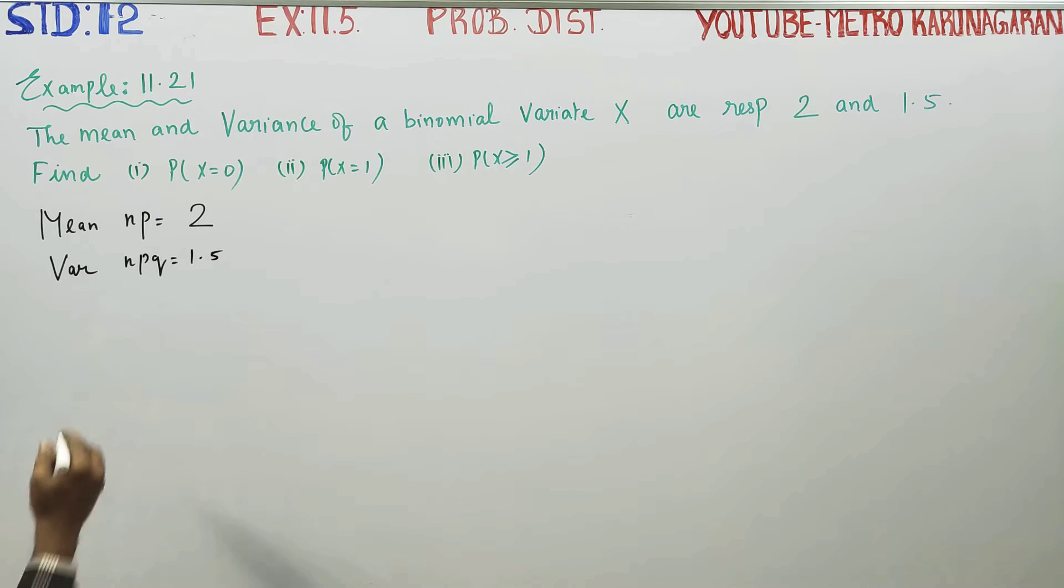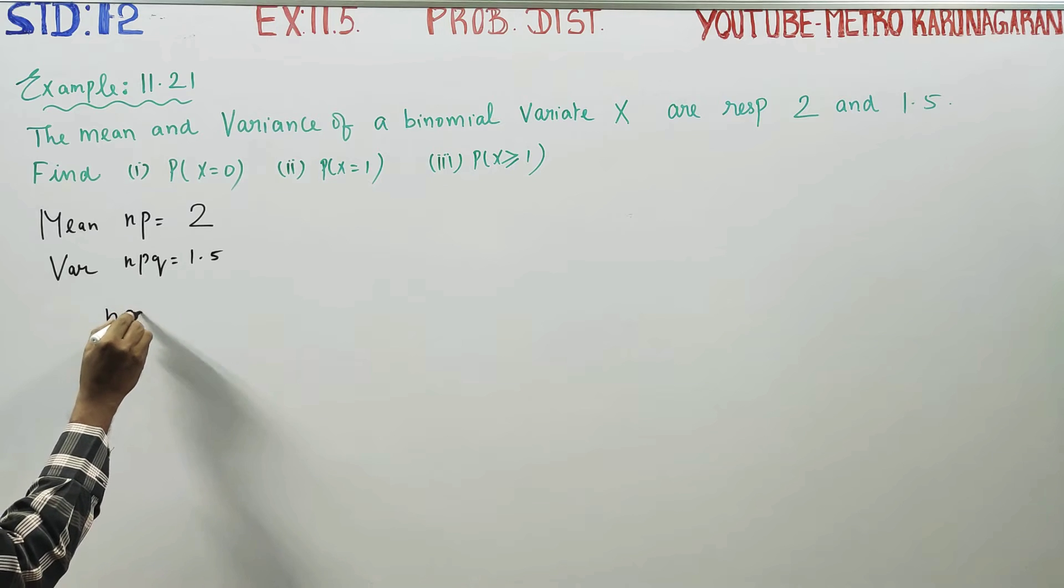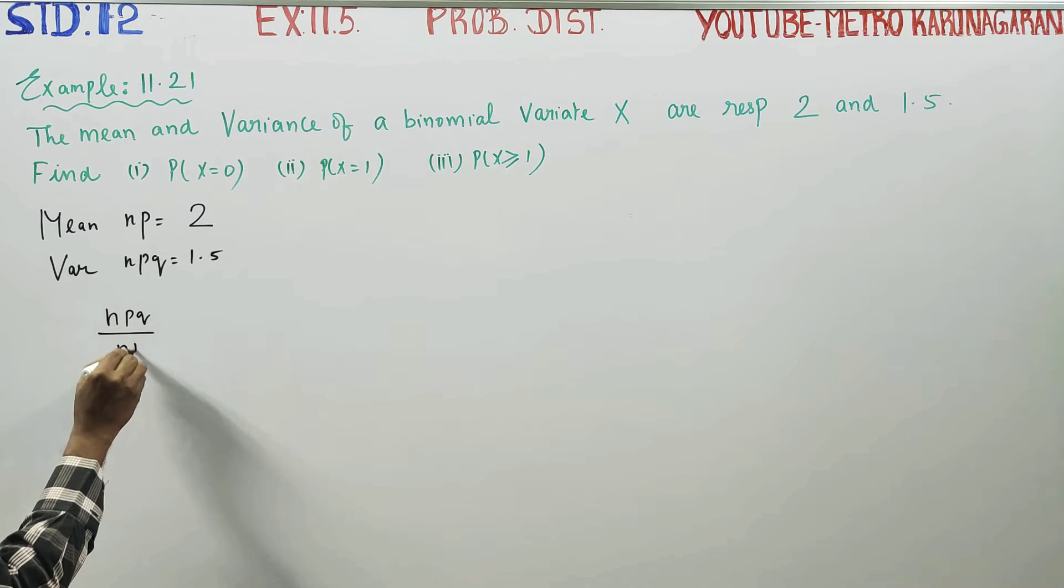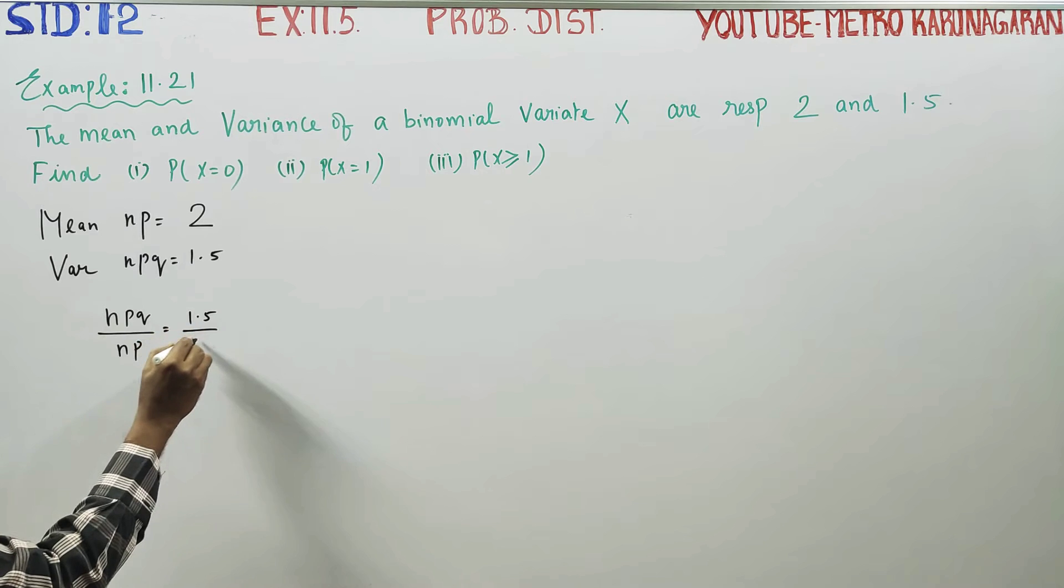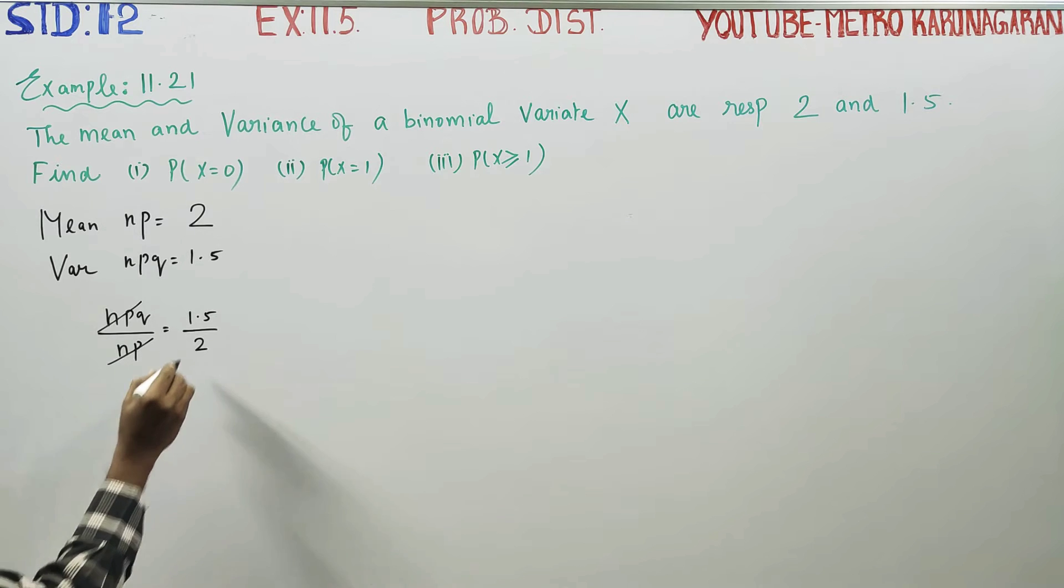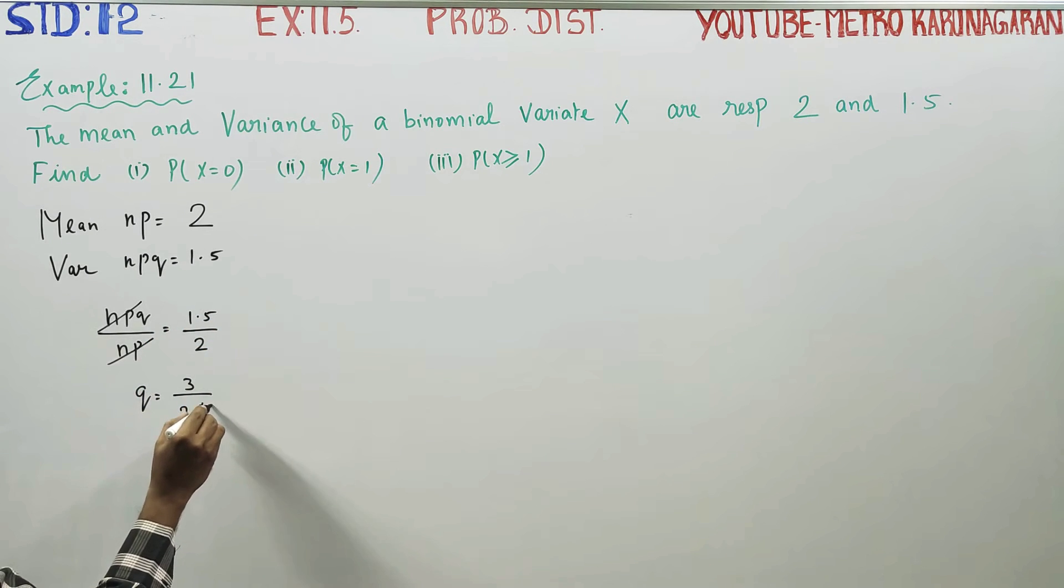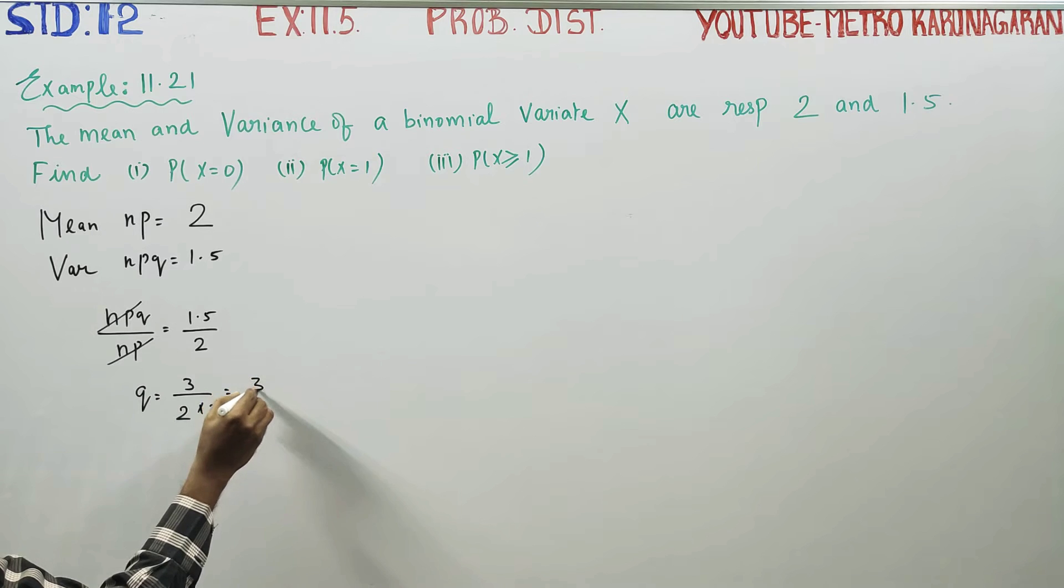Then 2nd equation, first equation divide by np. np by npq is equal to 1.5 divided by 2. np np cancel, q is equal to 1.5, then 3 by 2 into 2, your answer is 3 by 4.